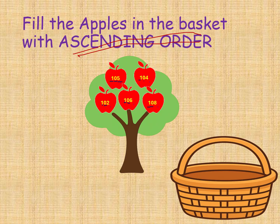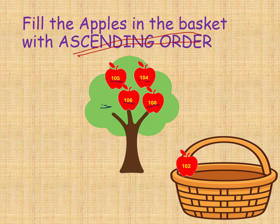So we move to the ones places: 5, 4, 2, 6, 8. In these numbers which is the smallest? Of course 2, so that apple — 102 — will come to the basket first. In the remaining four, we compare ones places: 5, 4, 6, 8. The next smallest is 4, so 104 comes next.